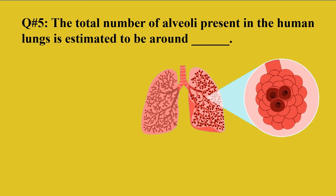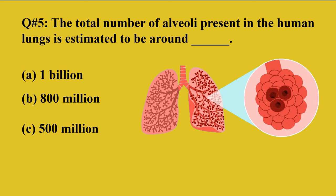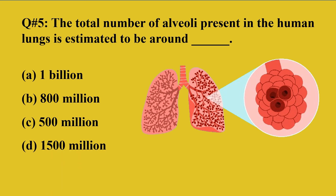Question number 5: The total number of alveoli present in the human lungs is estimated to be around — option A: 1 billion, B: 800 million, C: 500 million, D: 1500 million. The right option is C. The approximate number of alveoli present in human lungs is 500 million.